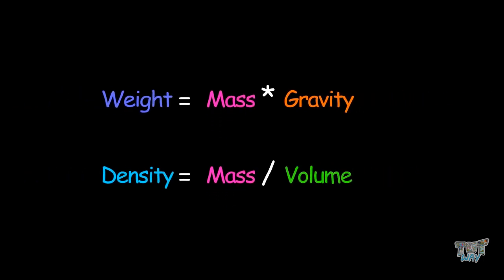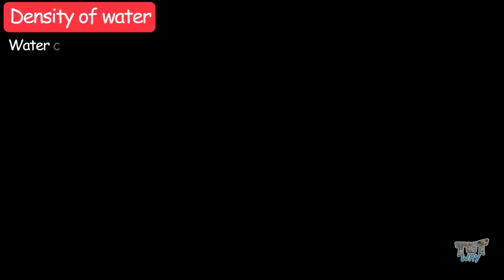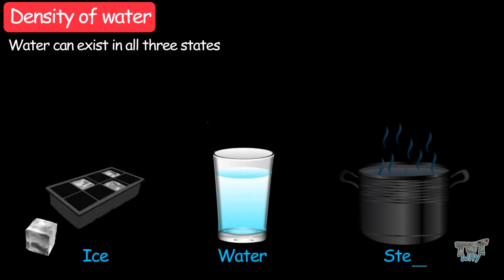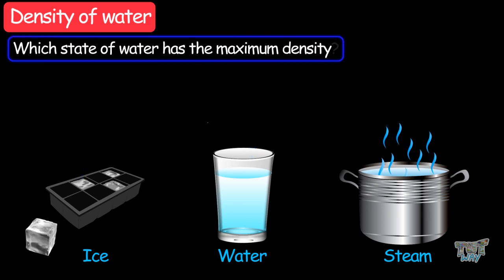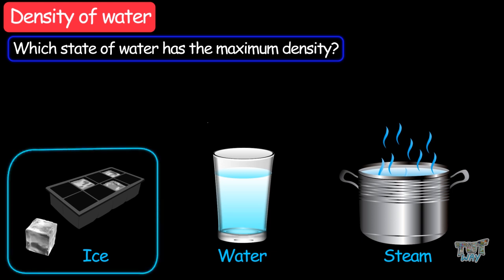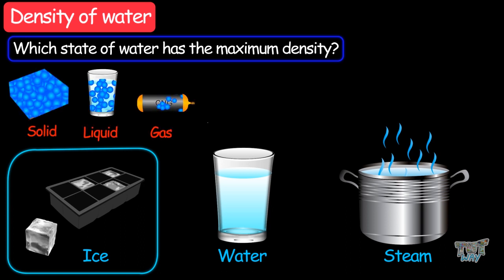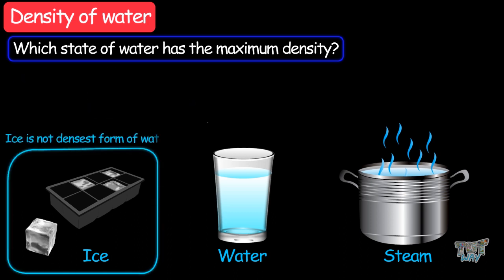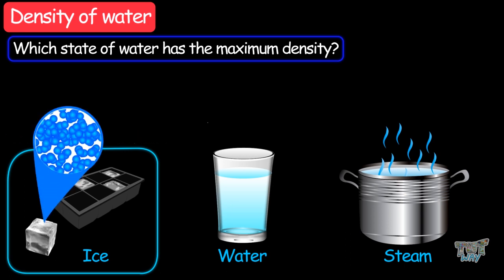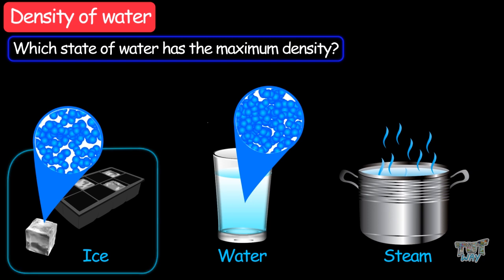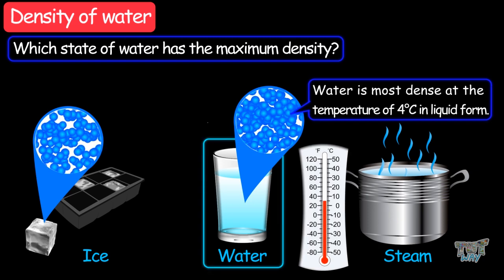Now let's learn about the density of water. Water can exist in all three states: ice, liquid water, and steam. Which state has the greatest density? The obvious answer seems to be ice, since ice is a solid and solids have maximum density. But this is not true in the case of water. Ice is actually less dense than liquid water. Water is most dense at 4 degrees Celsius in its liquid form.